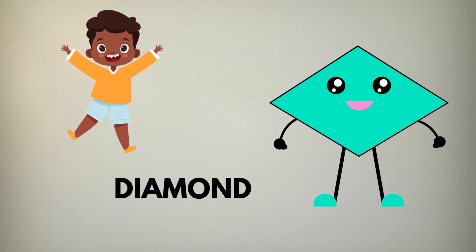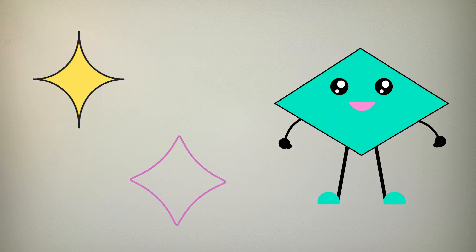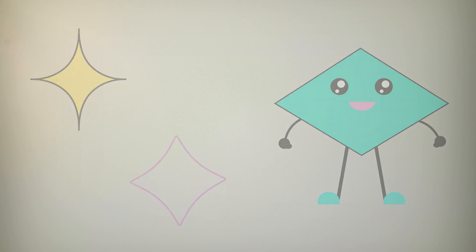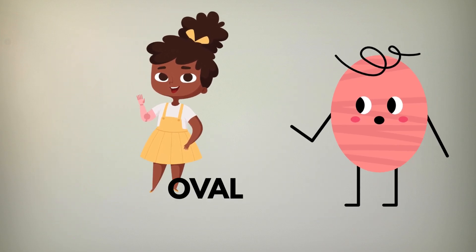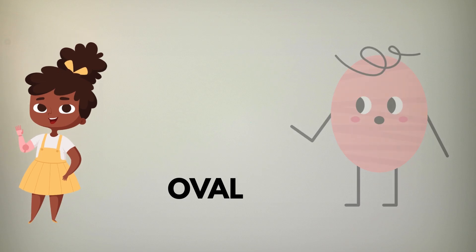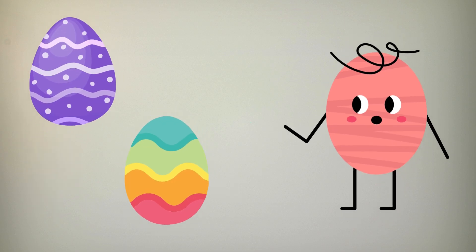Next is a diamond, sharp and sleek, shiny corners, bold and unique. Then comes the oval, not quite round, a stretched out circle on the ground.